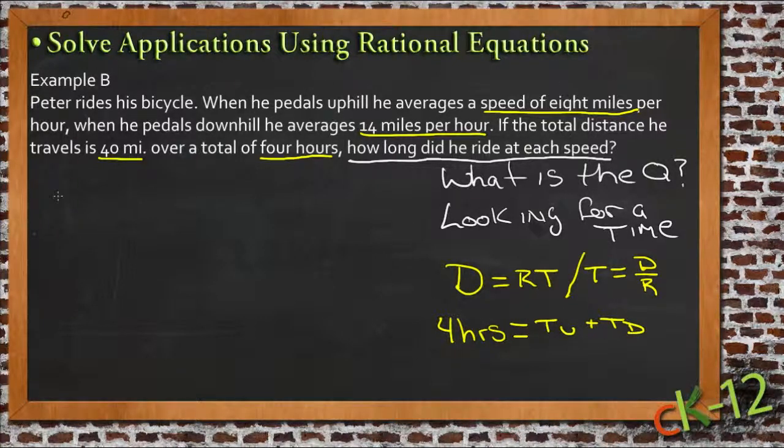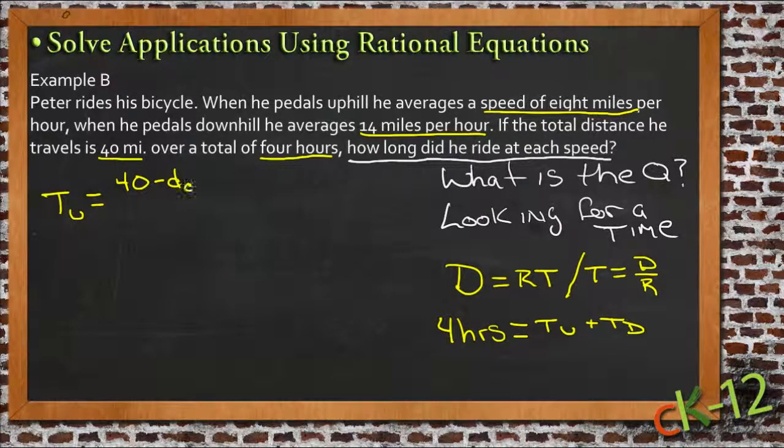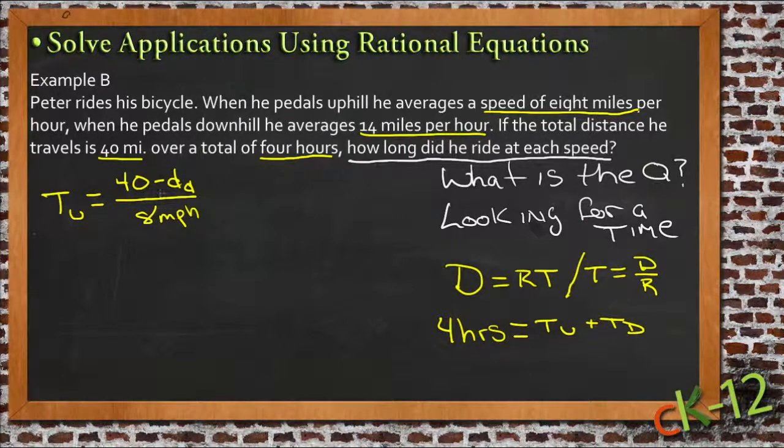Let's look at the first one. Time uphill equals the distance uphill, which we don't know. But we know it's part of that 40 miles - it's 40 miles after we take away the downhill part. So time uphill is 40 miles minus the distance downhill, which we'll call D sub D, divided by the rate uphill, or 8 miles per hour. Now we've written time uphill using other information.